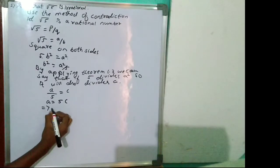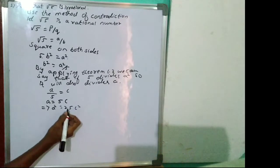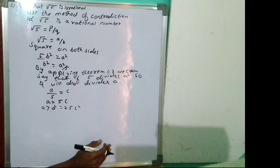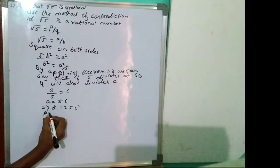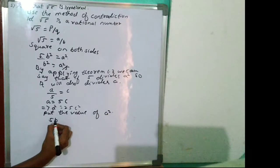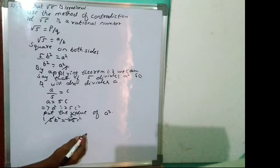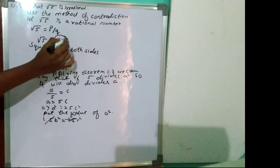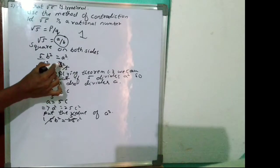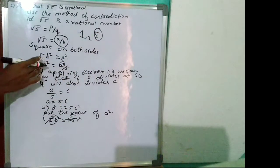Substituting a squared equals 25c squared into 5b squared equals a squared, we get 5b squared equals 25c squared, which simplifies to b squared equals 5c squared. This means 5 also divides b. So both a and b are divisible by 5, which contradicts our assumption that a and b share no common factors.